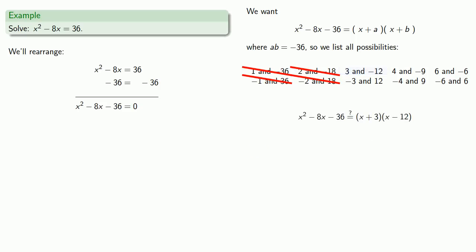(x + 3)(x - 12)? Nope. Well, 7th time's the charm, so it's got to be (x + 4)(x - 9). Nope. (x - 4)(x + 9)? Nope.